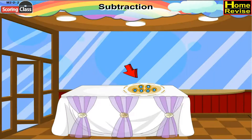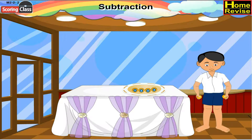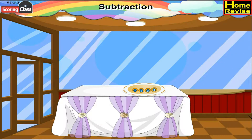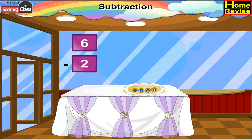Here is a plate with six ladoos on it. And, of course, you love ladoo. Anuj came and took away two ladoos. Now, we have to find the number of remaining ladoos. The above subtraction is written as six minus two. That would be four.